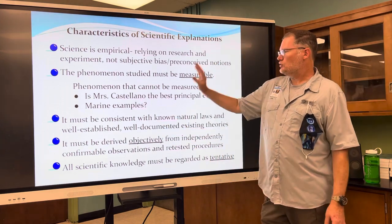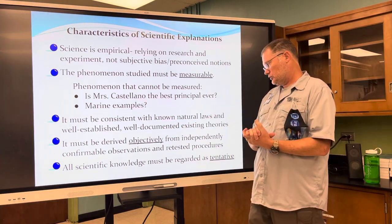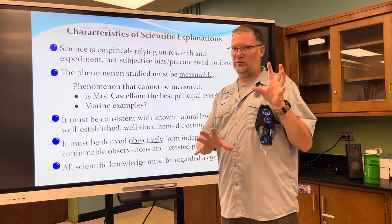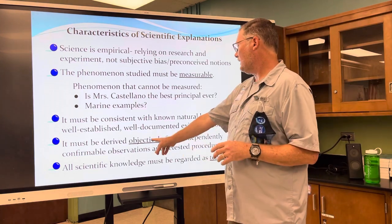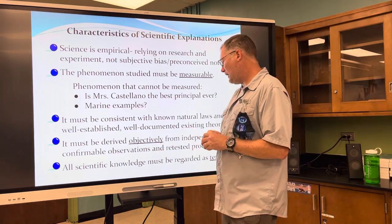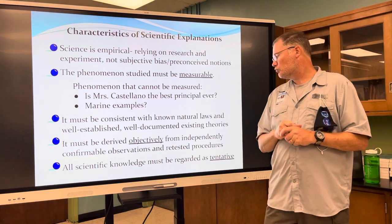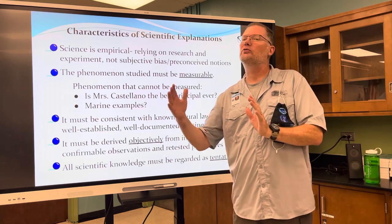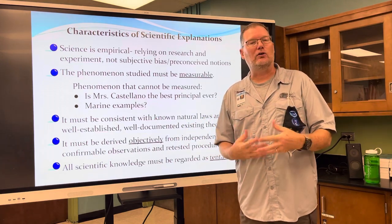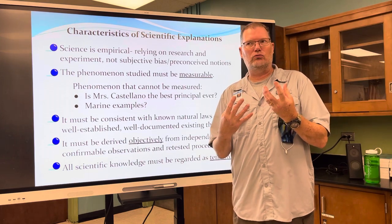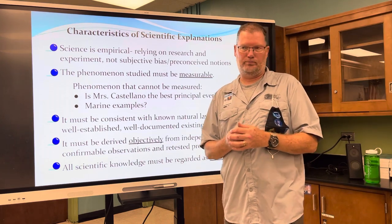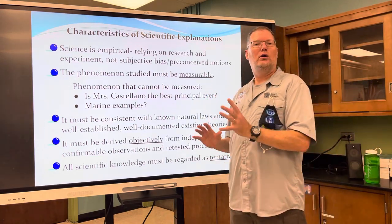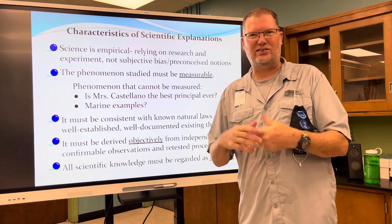All explanations must be consistent with known natural laws and well-established, well-documented existing theories. They must come from independently confirmable observations and retested procedures — not just tested once, but tested multiple times by different scientists getting the same answer. Then we can be fairly reliant on that information, because a single test could have mistakes. We need to get the same results.